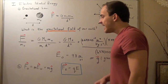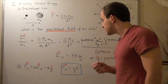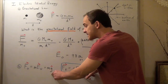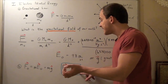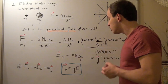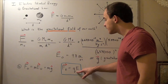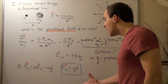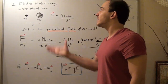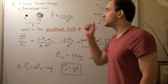Applying the same concept to electric fields: instead of multiplying the field by mass, we multiply the electric field by charge, giving us the force due to the electric field equals charge times the electric field. Now we can relate electric potential energy to gravitational potential energy.